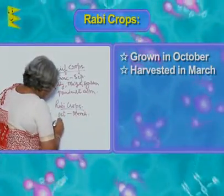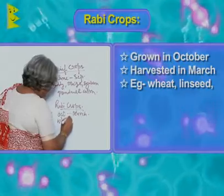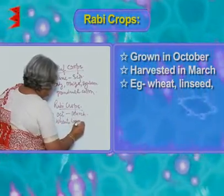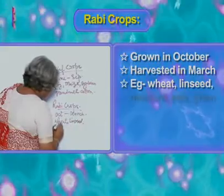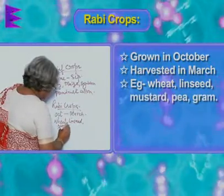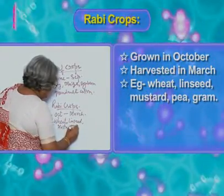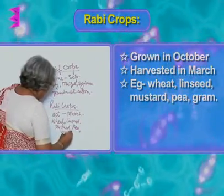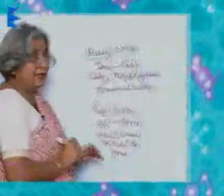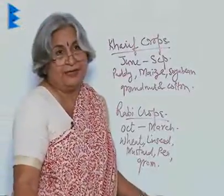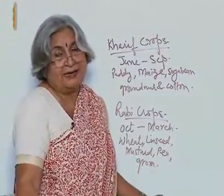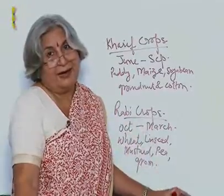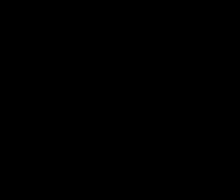Examples of Rabi crops include wheat, lentil, mustard, pea, and gram. These crops are grown in winter because they need short days, and that is why they are called Rabi crops.